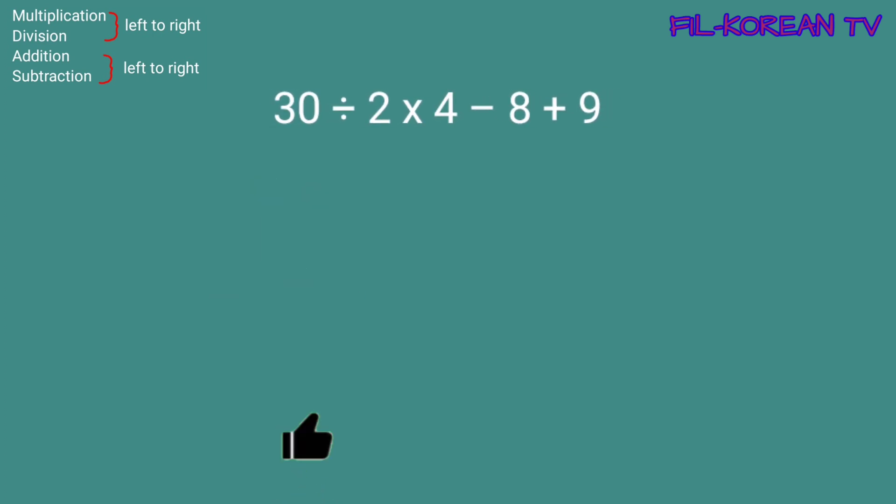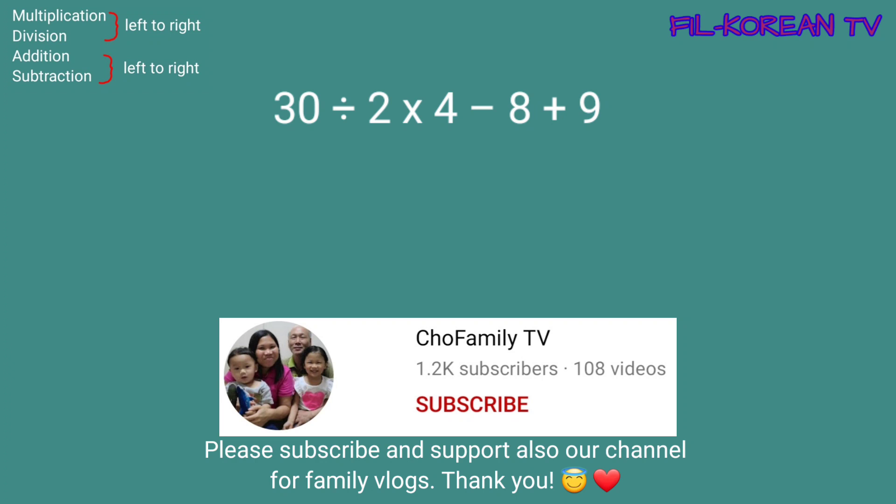Next problem: 30 divided by 2 times 4 minus 8 plus 9. I-solve natin ang problem na ito. Dito, magkasunod ang division at multiplication. Ang gagawin natin, left to right ang pag-solve. Magdi-divide muna tayo. 30 divided by 2 equals 15. Kaya magiging 15 times 4 minus 8 plus 9.